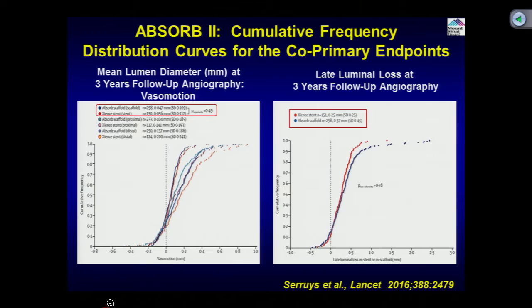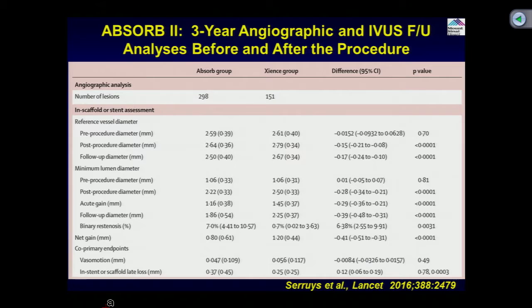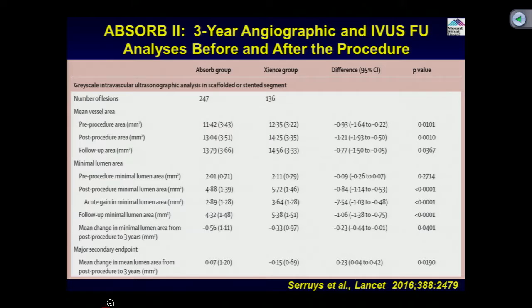The two co-primary endpoints: vasomotion by intracoronary nitroglycerin was identical in both groups including Xience — surprisingly, Xience also had vasomotion, which had been seen previously with Resolute DES. Identical vasomotion with both Absorb and Xience. For late lumen loss — from a non-inferiority standpoint — there was higher late lumen loss in the Absorb group compared to Xience. Clearly, Xience was superior in terms of lower late lumen loss as the primary endpoint. So they lost on two co-primary endpoints at three years. There was also positive remodeling with Absorb in earlier studies due to scaffold discontinuation, while with metal DES there is intimal hyperplasia and slight negative remodeling — seen in both angiographic and IVUS criteria.